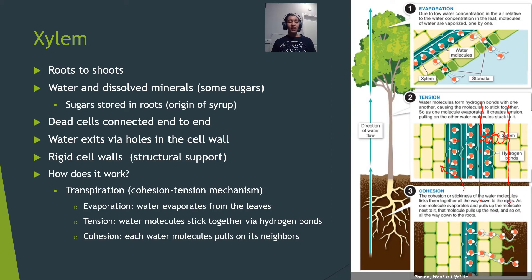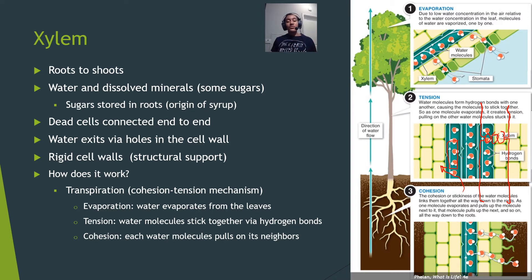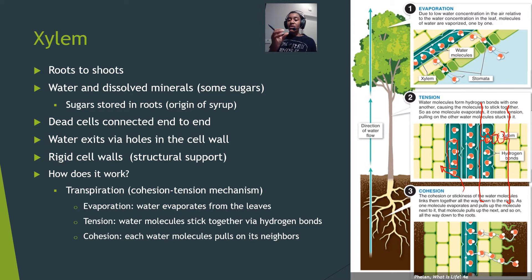How does water get from roots to shoots with no heart? The key is evaporation. Water moves from the roots to the shoots via the cohesion-tension mechanism. Water is always being evaporated from the leaves — moving from the xylem to the air via diffusion. As water evaporates, it pulls on the water molecules attached to it through hydrogen bonding. Remember diffusion and osmosis — they're going to be important.